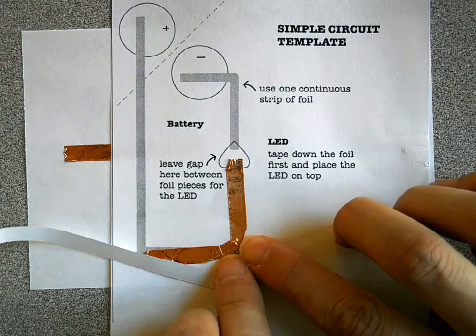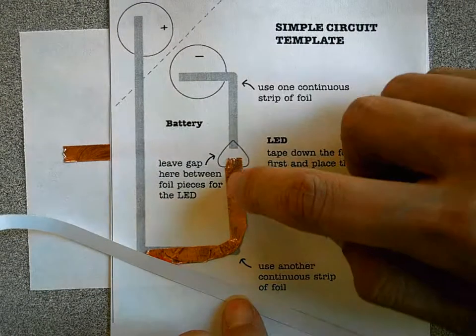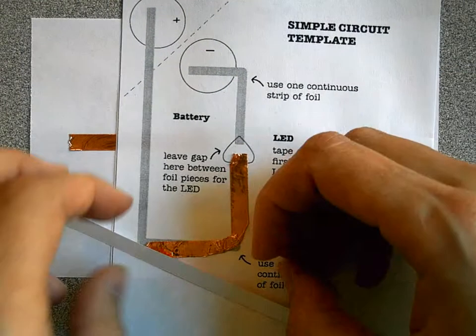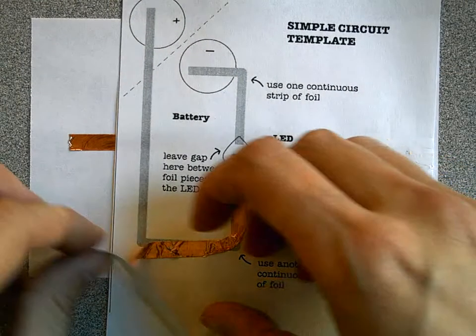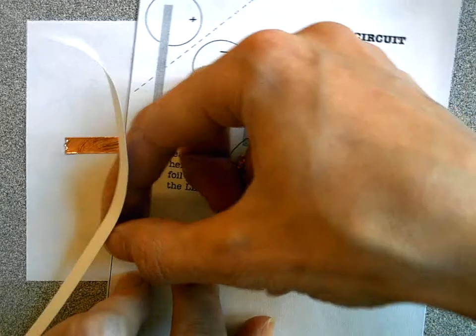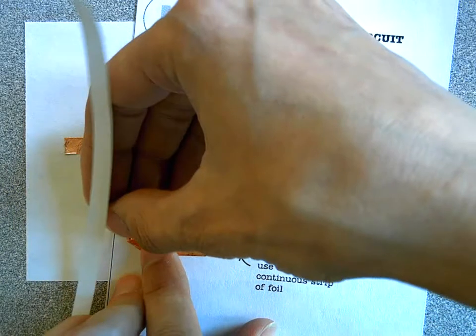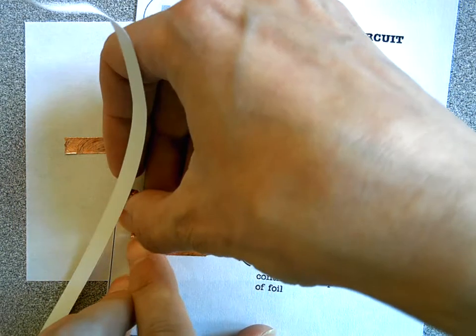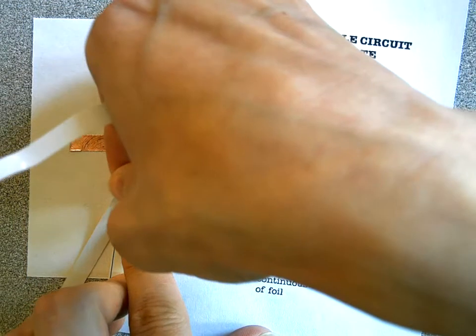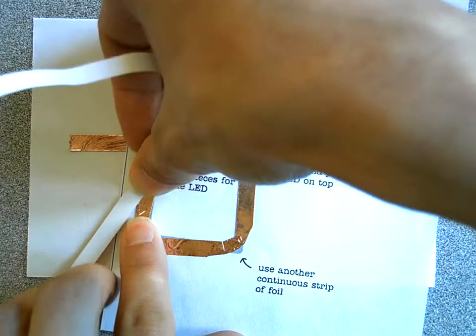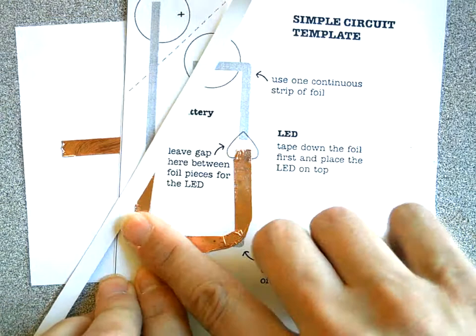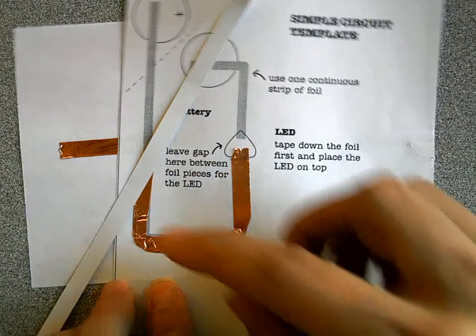What matters is that you have that continuous strip of foil that's going to allow the current to flow. Again on this next corner, I'm going to really manipulate the foil with my fingers, being bigger and stronger than it, making it do what I want it to do to go around that corner without ripping the foil.